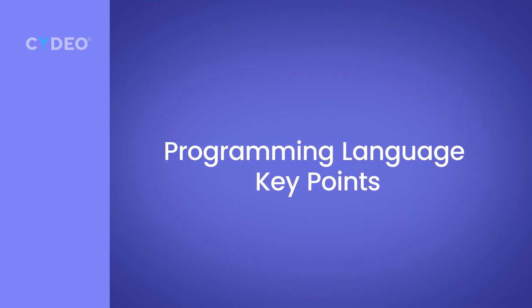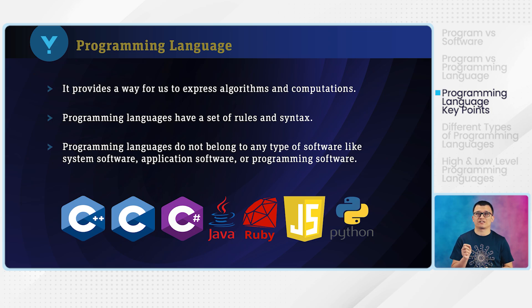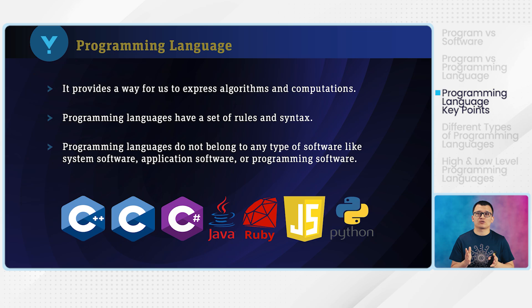Here are the key points about programming language. Programming language provides a way for us to express algorithms and computations. Programming language has a set of rules and syntaxes — if you want to write a program, you need to follow the rules and syntaxes of that specific programming language. Programming languages do not belong to any software, not even programming software. Programming software refers to IDEs, which help you write your source code. The most popular programming languages include C#, C++, Java, Ruby, JavaScript, and Python.